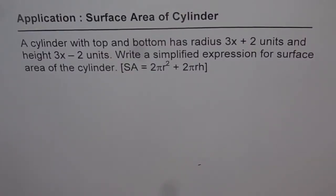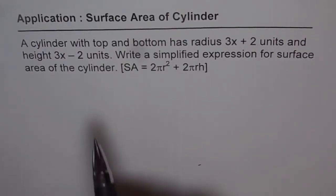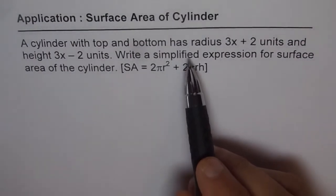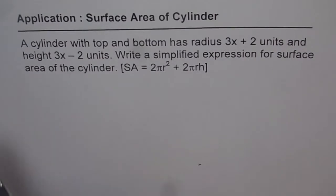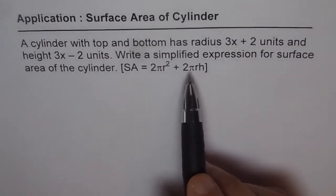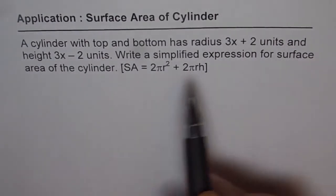Application: Surface area of cylinder. A cylinder with top and bottom has radius of 3x plus 2 units and height 3x minus 2 units. Write a simplified expression for surface area of cylinder.